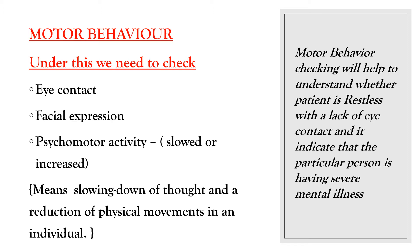Under motor behavior, check facial expression — whether angry, irritable, restless, or tired. Check psychomotor activity, meaning how the person's thought and physical movement are aligned. You can write slow or increased psychomotor activity. Also check body language — whether normal or showing unusual mannerisms, such as always shaking their hand or head while talking.